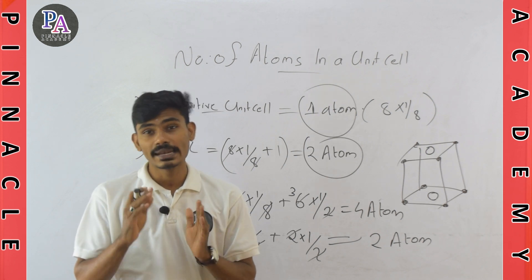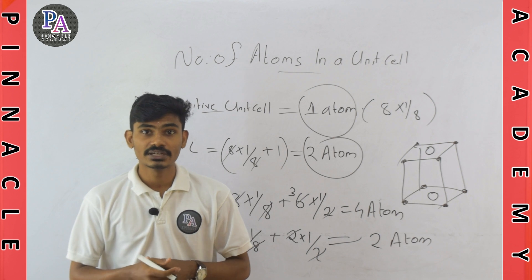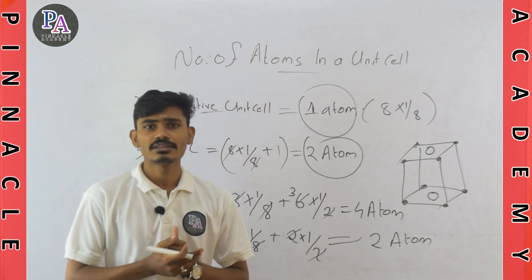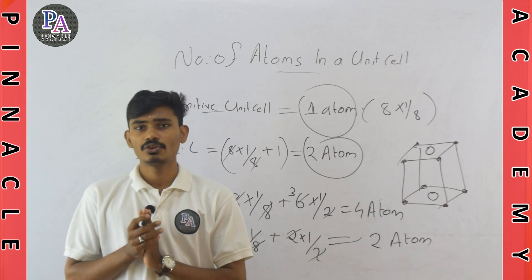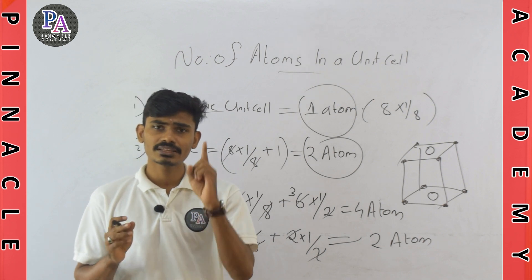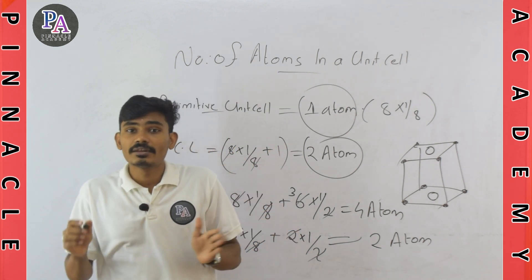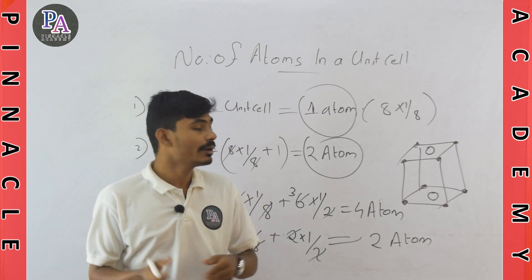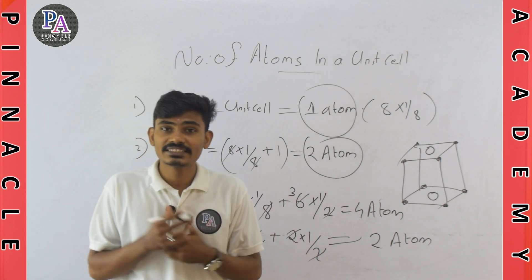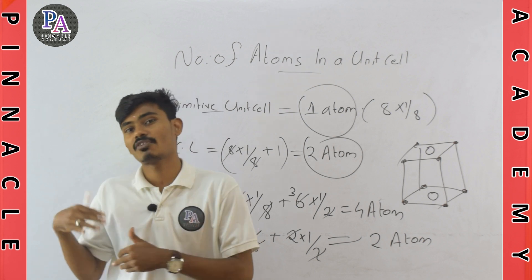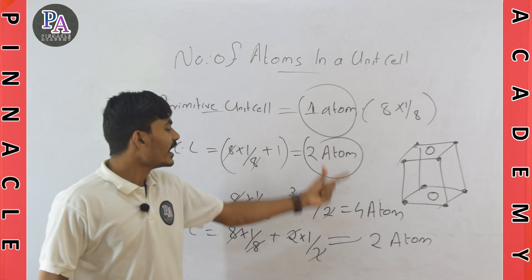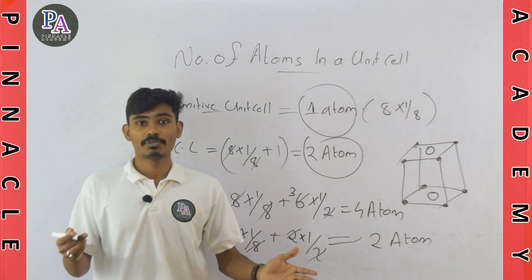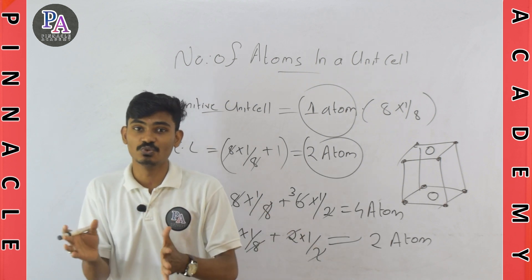So we have calculated the number of atoms in each unit cell and they have different values. In the primitive unit cell, the value is 1 atom. In the body-centered cubic, there are 2 atoms. In the FCC, it will be 4 atoms. In the end-centered cubic, it is also 2 atoms. To memorize: primitive = 1, FCC = 4, body-centered = 2, end-centered = 2.